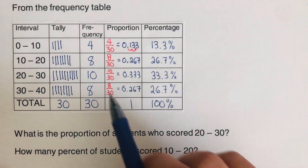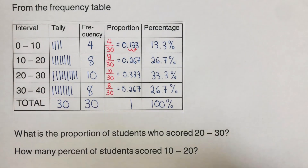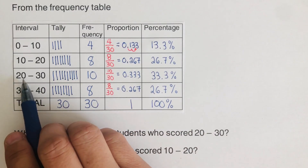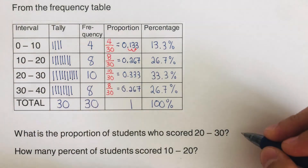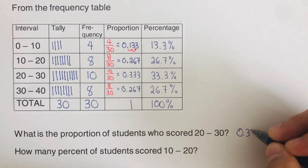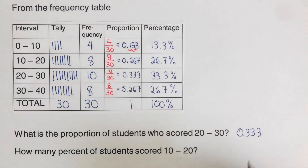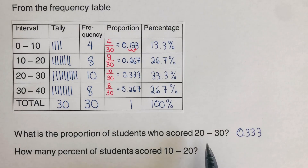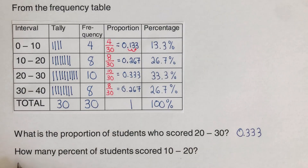Now let's use this table to answer some questions. First: what is the proportion of students who scored 20 to 30? Going to the interval 20–30 and looking at the proportion column, the answer is 0.333. This means that if you randomly ask a student from this class, the probability that they scored between 20 and 30 is 0.33.